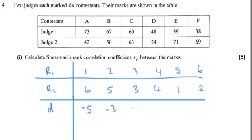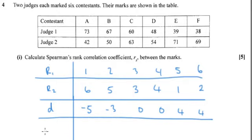Minus 5, minus 3, 0, 0, 4, and 4. And then we square the ranks so that we've got positive values. So 25, 9, 0, 0, 16, and 16.